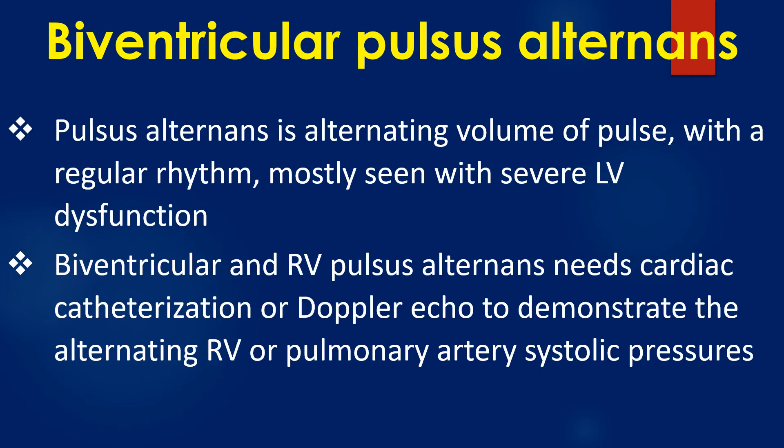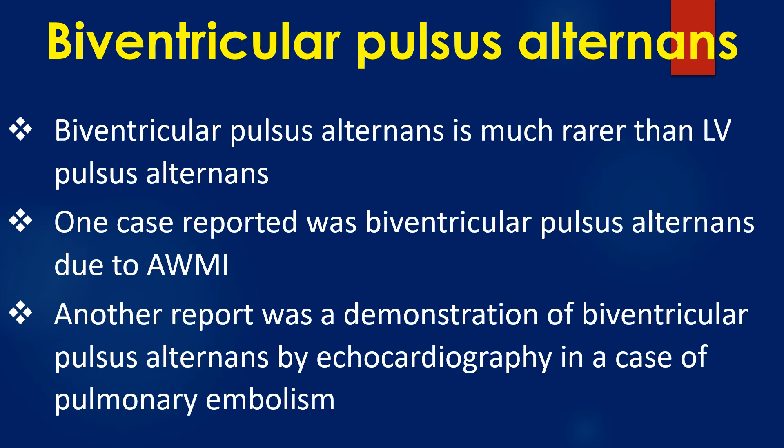Pulse alternance is alternating volume of pulse with a regular rhythm, mostly seen in left ventricular dysfunction. Biventricular and right ventricular pulse alternance needs cardiac catheterization or Doppler echocardiography to demonstrate the alternating right ventricular or pulmonary artery systolic pressures. Biventricular pulse alternance is much rarer than left ventricular pulse alternance.